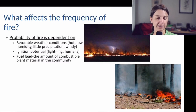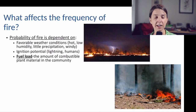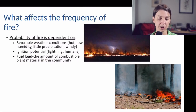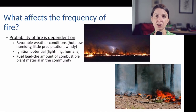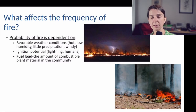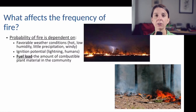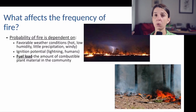The last factor influencing fire probability is the fuel load — the amount of combustible plant material in a community. This includes things like dead above-ground grasses in grasslands or prairies, dead leaves and branches that fall off trees, and dead stumps. The greater the fuel load, the more opportunity for a fire to start and to continue to burn.